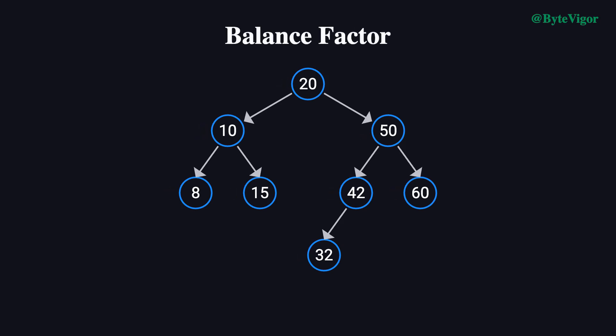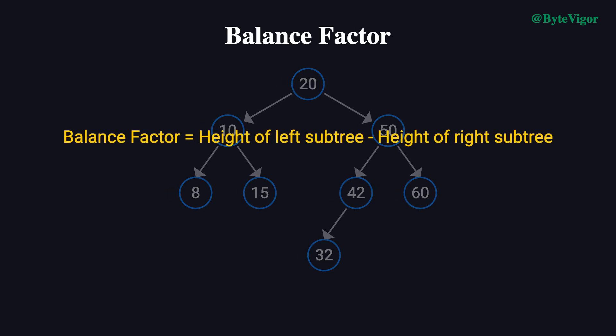The second concept is the balance factor. The balance factor of a node is defined as the height of its left subtree minus the height of its right subtree. In an AVL tree, the absolute value of the balance factor of every node must not exceed one—meaning valid values are -1, 0, or 1. In other words, the height difference between the left and right subtrees of any node cannot exceed one. If it does, the tree needs to be rebalanced through rotation operations.